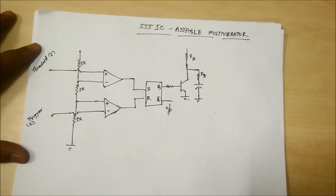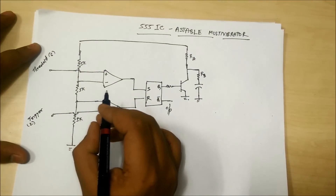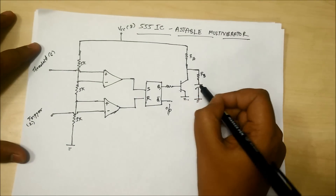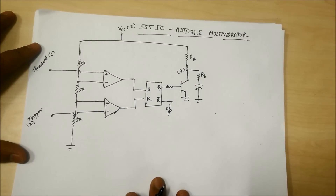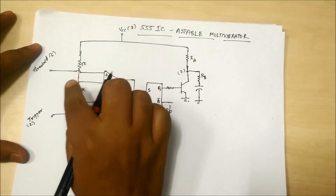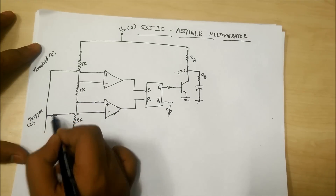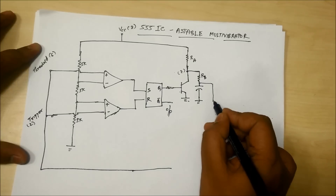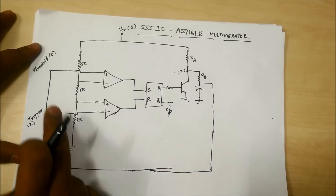Resistance RB is connected to VCC, which is pin number 8. Pin number 2 is the trigger pin and pin number 6 is the threshold pin, and pin number 7 is the discharge pin. The voltage across the capacitor is fed to both the trigger pin and the threshold pin — these two pins are shorted together and connected to the capacitor.